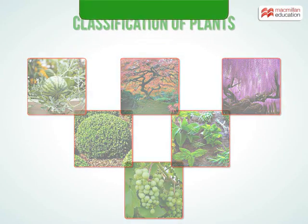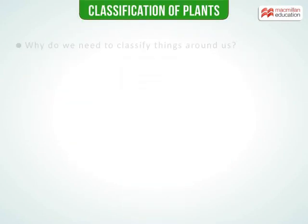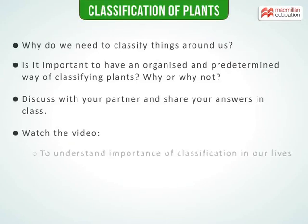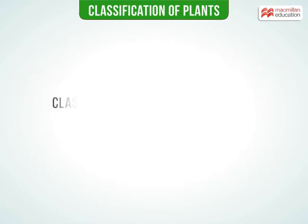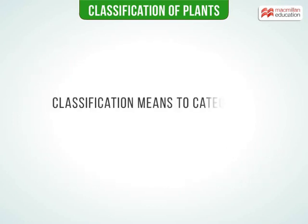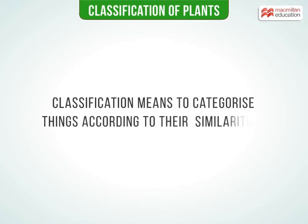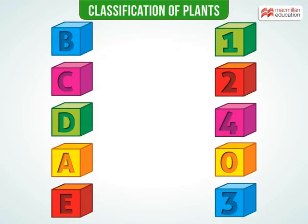Classification of Plants. Classification means to categorize things according to their similarities. Classification happens everywhere, be it at home or school.